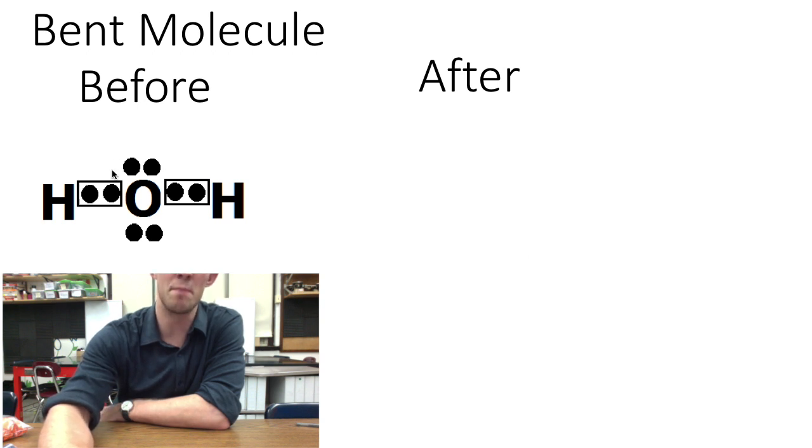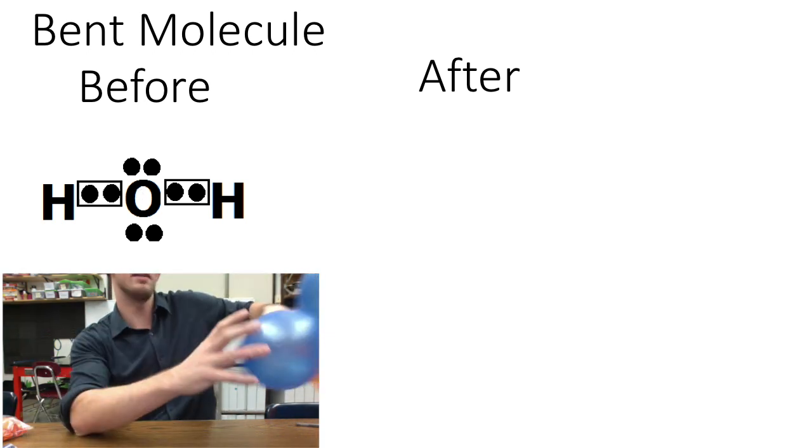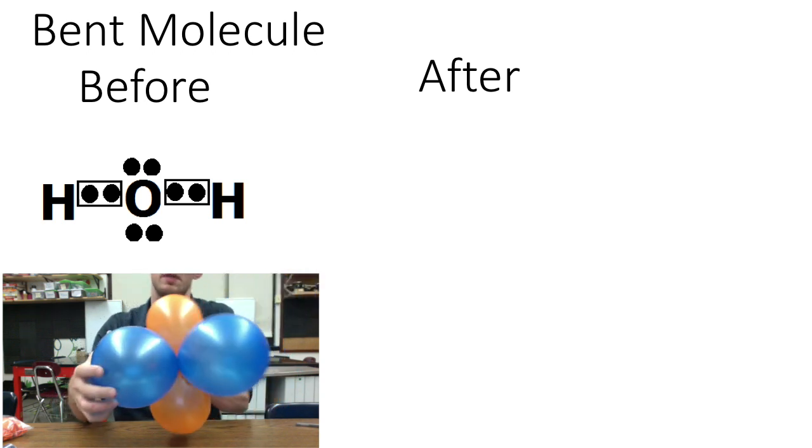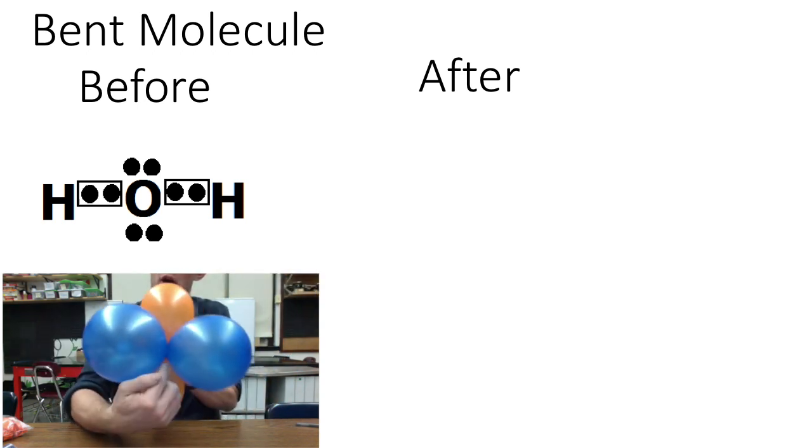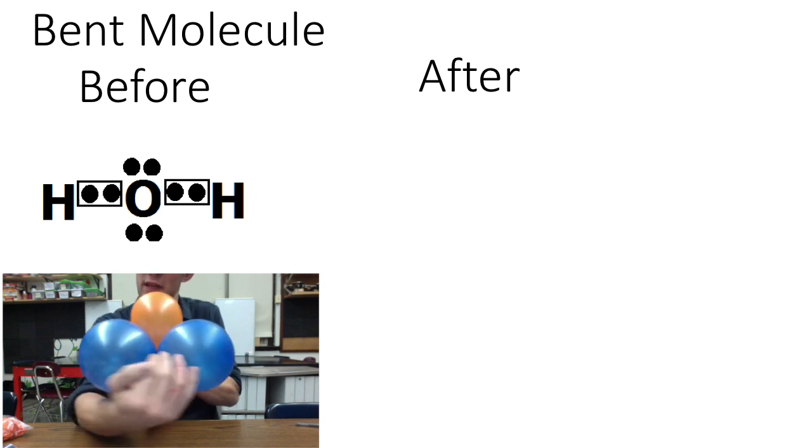The next type of molecule is a bent molecule, for instance a water molecule shown here as bent. And at first glance a bent molecule looks like a linear molecule because it has two atoms coming off of a central atom. So we might say that these hydrogens look linear. However,